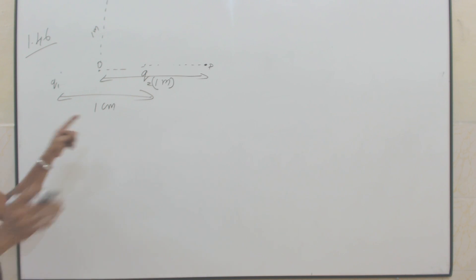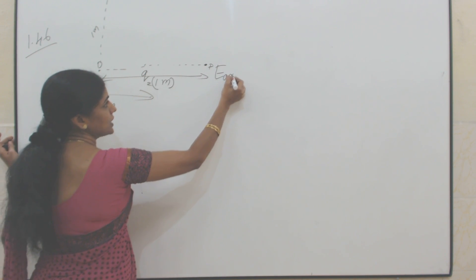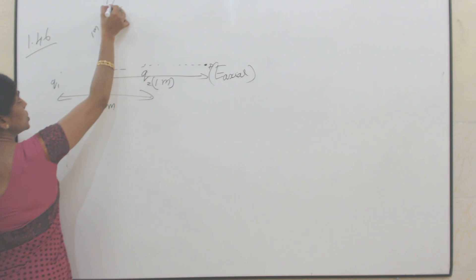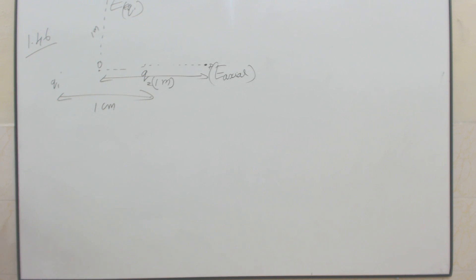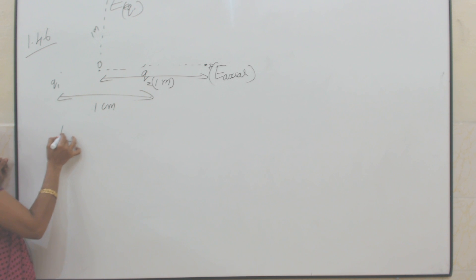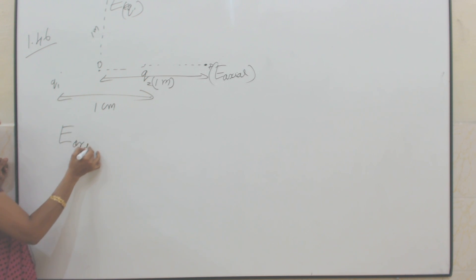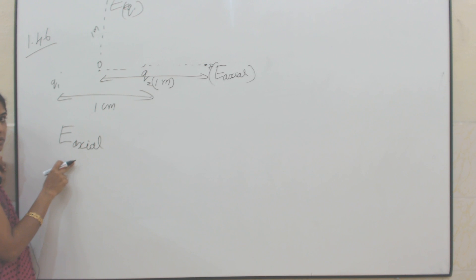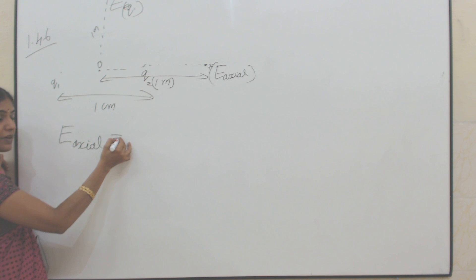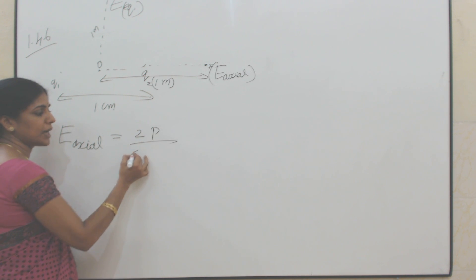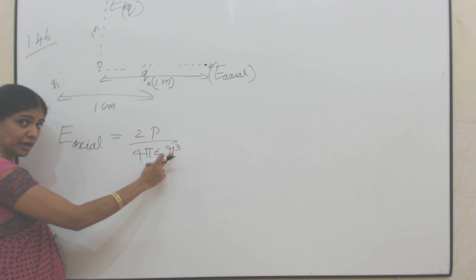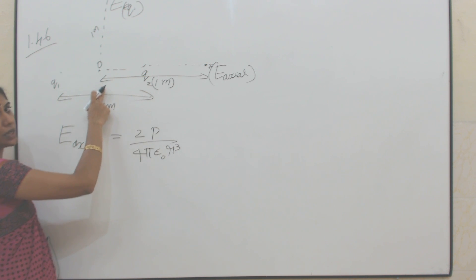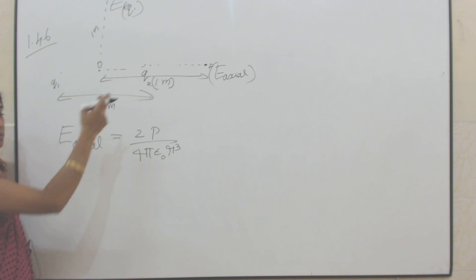We want to find out the electric field on the axial line and also on the equatorial line at a distance of 1 meter from the center of the dipole. The formula for electric field due to a dipole at a point on its axial line is E = 2P / (4πε₀R³), where R is the distance of the point from the center of the dipole. Here R is taken as 1 meter.